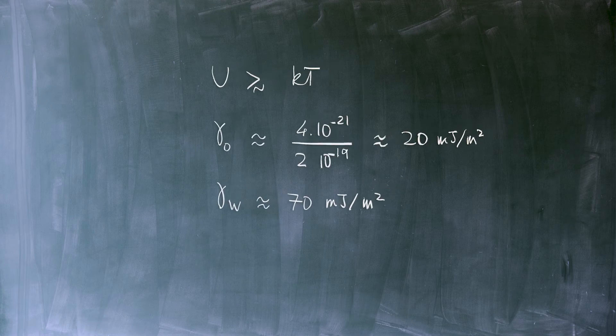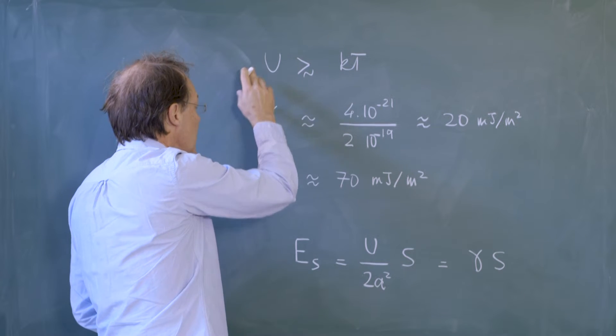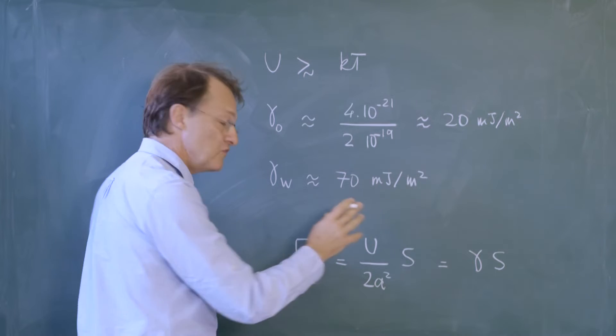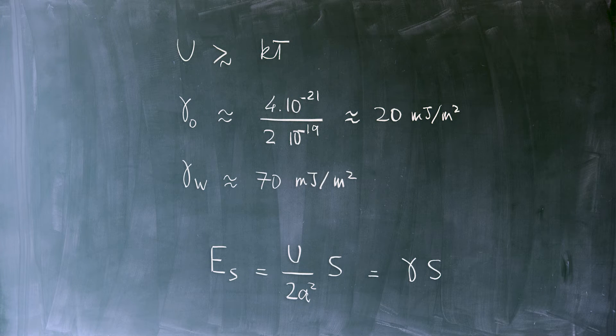Of course, if we go to a very special place, which is a critical point of water, we cannot distinguish any more liquid from vapor. We expect U to vanish and so gamma should vanish in the same way as U. So this is a very special case where surface tension vanishes.